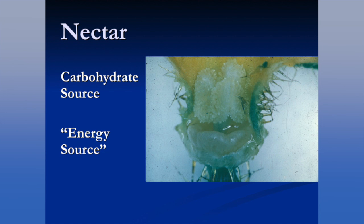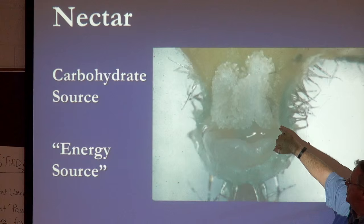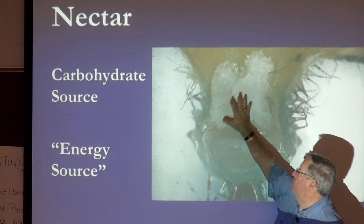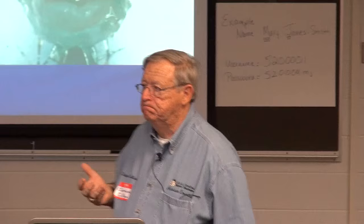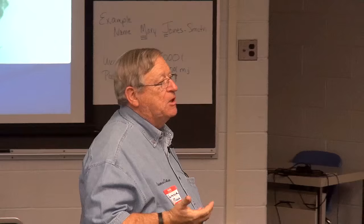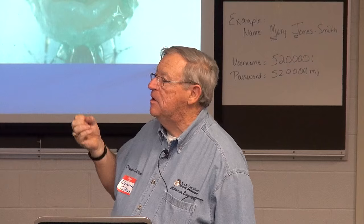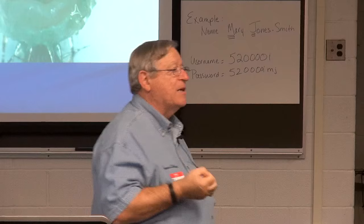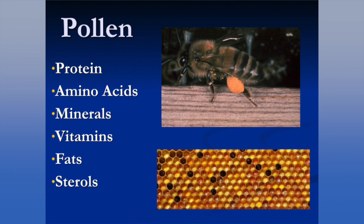Nectar is their carbohydrate source. Here we see a picture of a cucumber nectary — actually in a female or pistillic cucumber flower. The nectary is cup shaped, and you can see the accumulation of nectar below the stigmatic surface of the female flower. The carbohydrate source is their energy source, so in order for them to produce heat in the winter cluster, to fly, to raise brood, they need energy from nectar, honey, sugar syrup, or sugar candy.